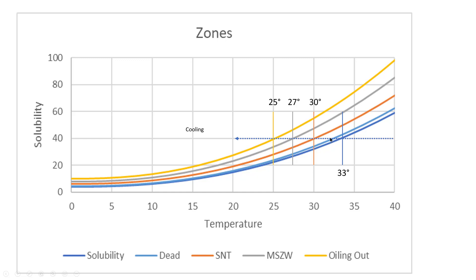Above the MSZW limit, crystals will not spontaneously come out. Below it they will come out fairly easily, but may be too fast and come out disordered. If you go even cooler and cool very rapidly, it might go into the oiling out zone, where it falls out as a liquid which then refuses to crystallize or might crystallize very slowly. So it's important to understand these zones.